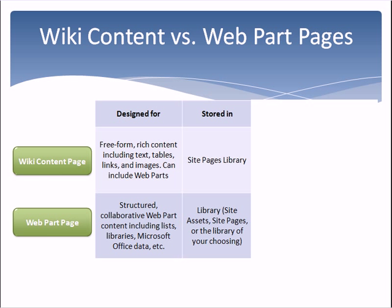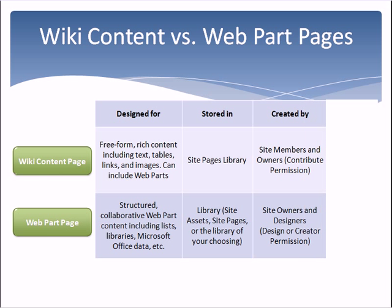Wiki pages are stored in the site pages library, while web part pages are stored in different libraries, including site assets, site pages, or the library of your choosing. Wiki pages can be created by site members, owners, and others with a contribute permission, while those with a design or creator permission, including site owners and designers, can create web part pages. And both types of pages can be set as the site's home page.